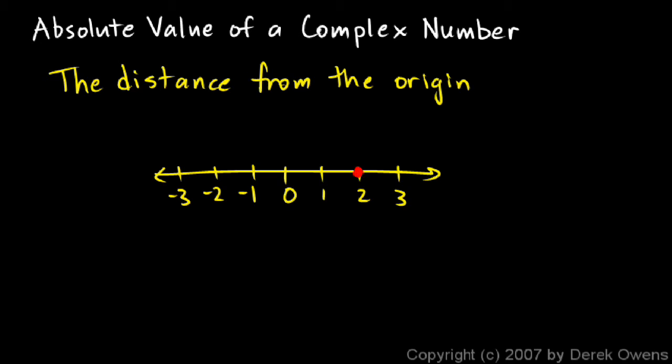So the absolute value of 2, for example, you can see that the number 2 is 2 units away from the origin. So the absolute value of 2 is just 2. Or the number negative 2 is also 2 units away from the origin.